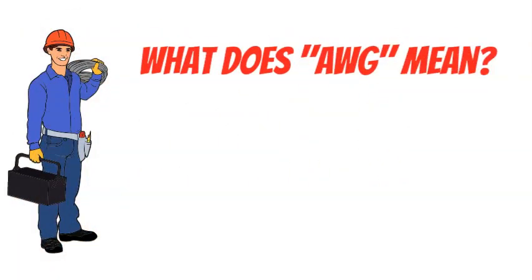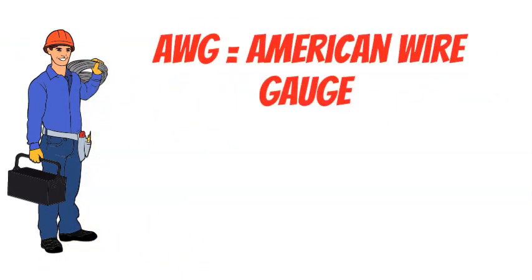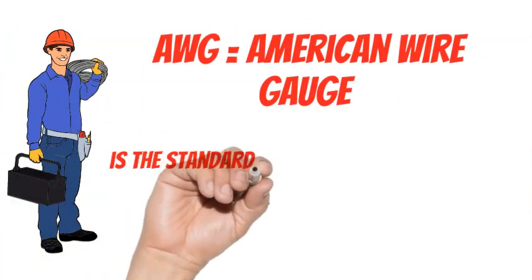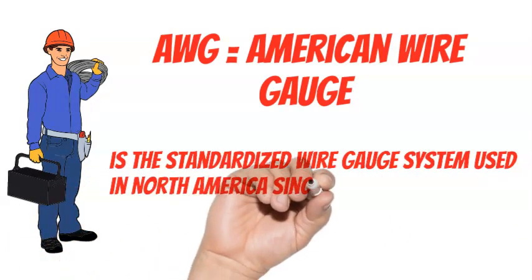What does AWG mean? AWG stands for American Wire Gauge. American Wire Gauge is the standardized wire gauge system used in North America since 1857.